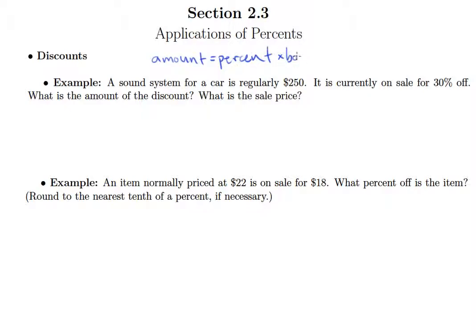So we know that the 250 is the base. Of course the 30% is our percent and they're asking us for the amount of the discount. So the amount's what I'm looking for. I use the decimal form of 30% and then times 250. So my X is going to be, looks like 75.